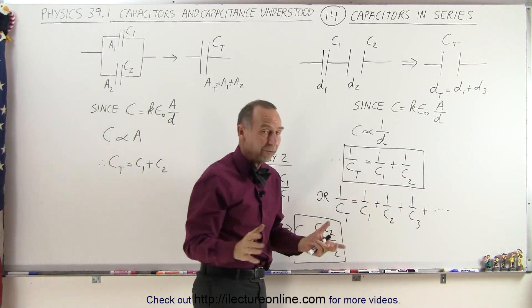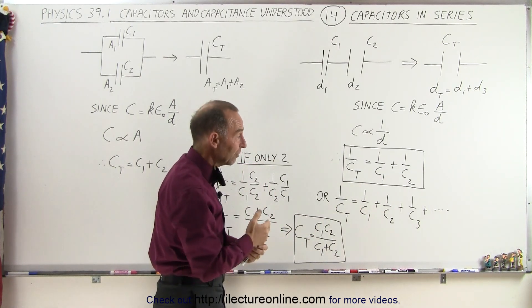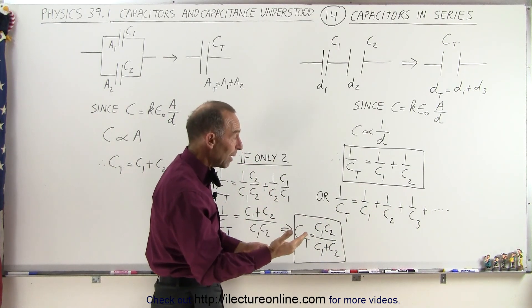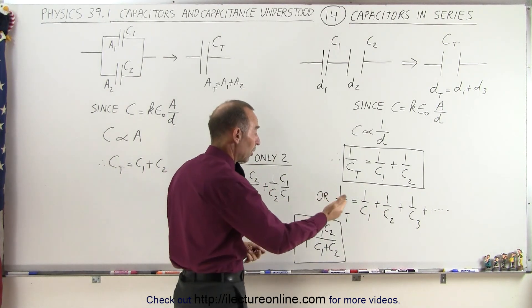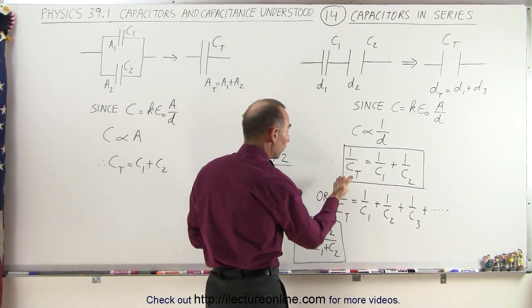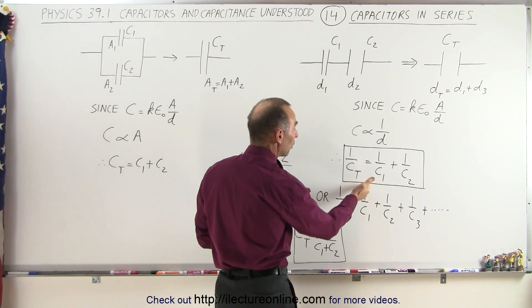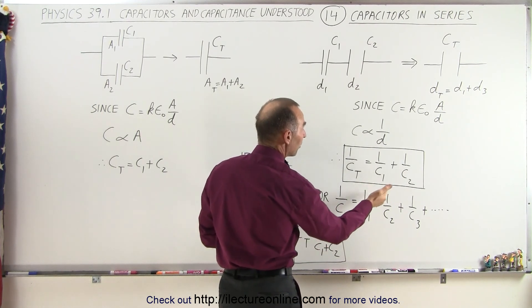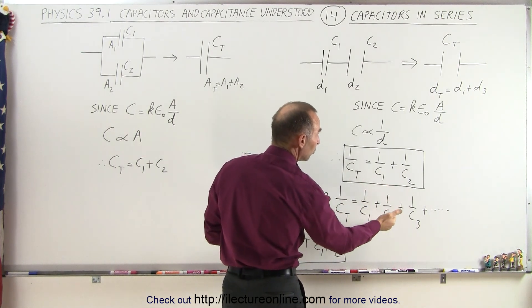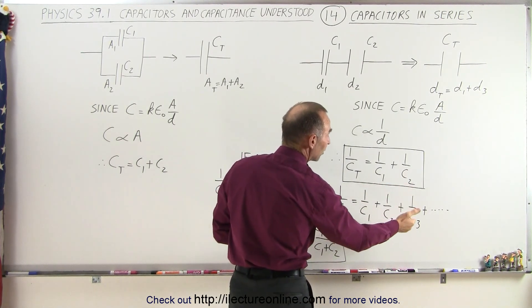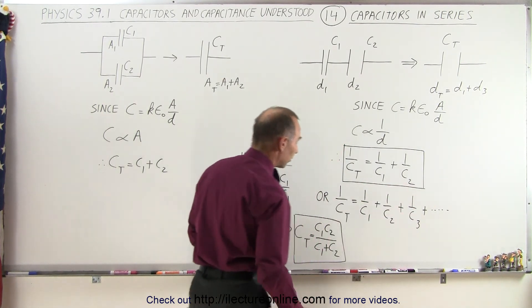That's provided there are two capacitors. If there are more than two, the equation becomes 1 over C total equals 1 over C1 plus 1 over C2 plus 1 over C3, and so forth.